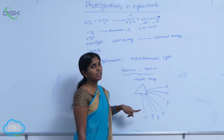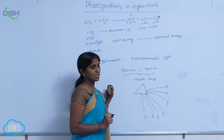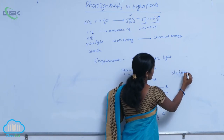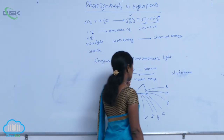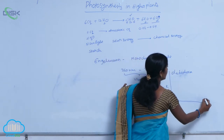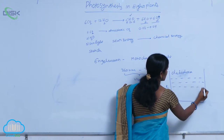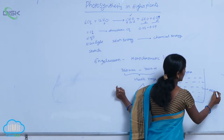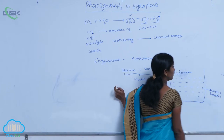Which monochromatic light is suitable for photosynthesis is clearly explained using the Cladophora species. Cladophora species is an algae, and it is inoculated into the culture medium or culture suspension of bacteria — specifically aerobic bacteria.